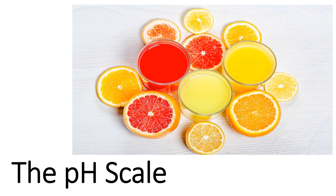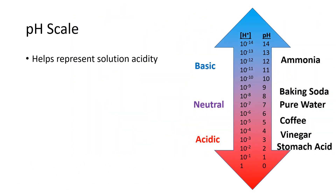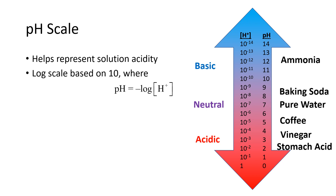In this video, we'll discuss the pH scale. The pH scale is commonly used to represent solution acidity. The pH scale is a log scale based on 10, where P is the negative log. Thus, the pH is the negative log of the concentration of H+.